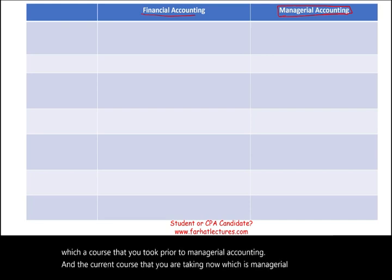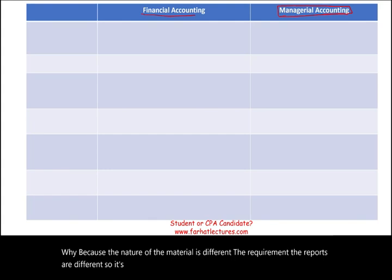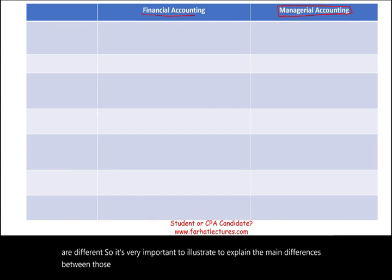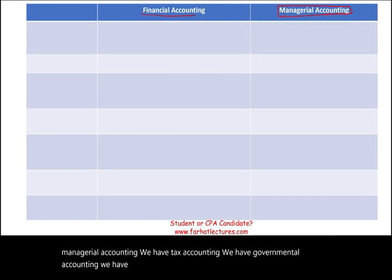Why? Because the nature of the material is different. The requirements and the reports are different. So it's very important to illustrate and explain the main differences between those two fields of accounting. We have financial accounting, managerial accounting, tax accounting, governmental accounting — many types of accounting. So you want to know the difference between each one of them.